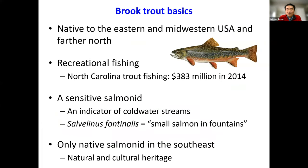Brook trout are native to the Eastern and Midwestern USA and farther north to Canada. Trout fishing is a multi-billion dollar industry in the USA — North Carolina estimated an economic benefit of trout fishing at nearly $400 million about a decade ago. Brook trout are often considered an indicator of high-quality cold water streams. Their scientific name, Salvelinus fontinalis, indicates 'small salmon in fountains or springs fed by groundwater.' Belonging to genus Salvelinus, it's really a char, although brook trout is the common name.